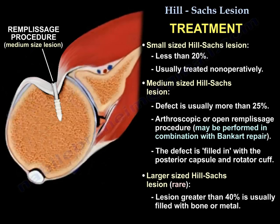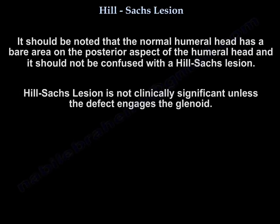When you have a large Hill-Sachs lesion, which is rare, the lesion — usually greater than 40% — is filled with bone or metal. It should be noted that the normal humeral head has a bare area on its posterior aspect, and this should not be confused with a Hill-Sachs lesion.